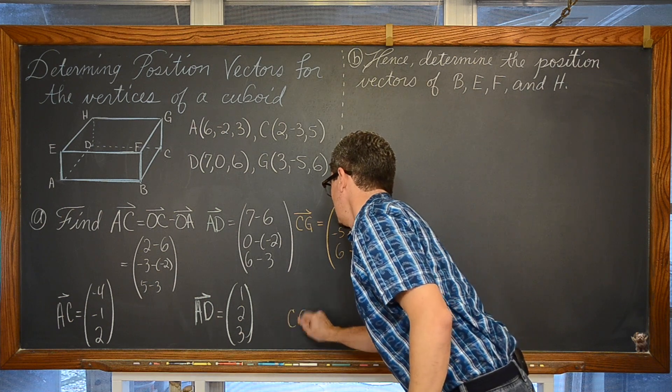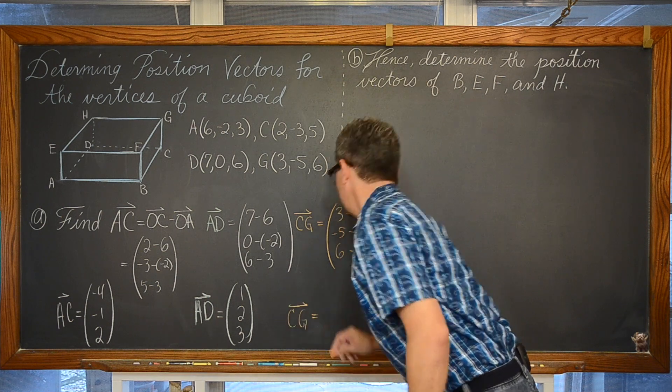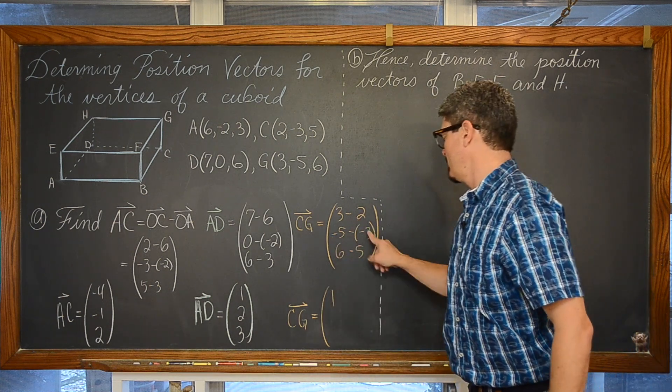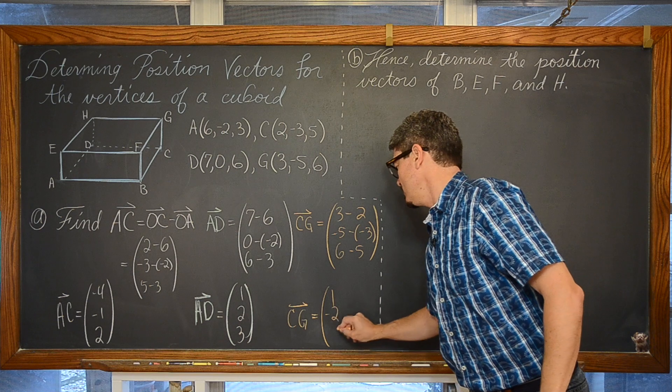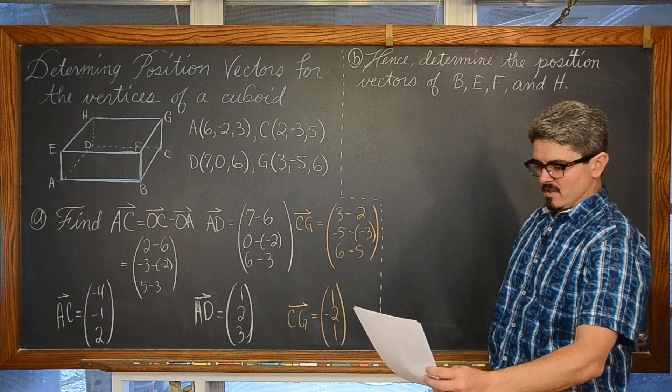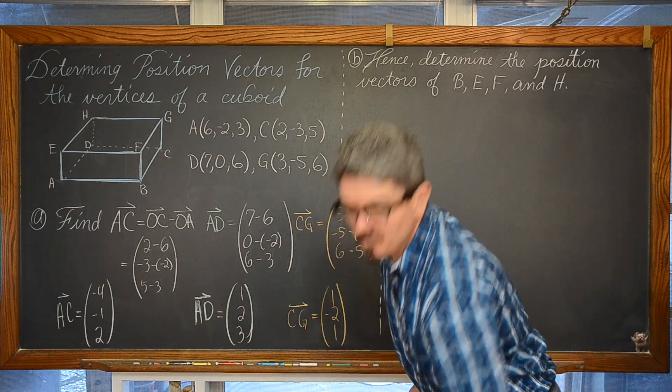So vector CG is equal to 1, negative 5 plus 3 is negative 2, and 1. Let me just make sure I haven't made some kind of silly mistake. No. OK.